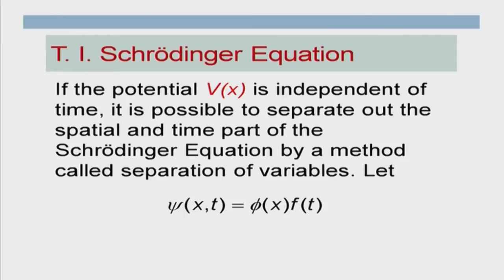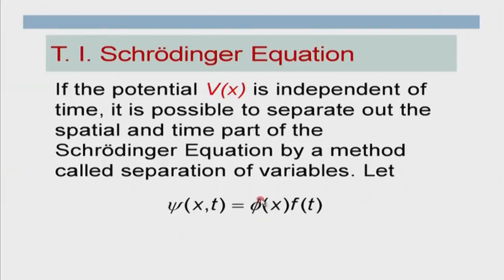We assume that psi(x,t) can be written as a product of two functions: phi(x), which is purely a function of position and contains no time dependence, and f(t), which is purely a function of time with no x dependence. If this product form happens to be a solution, then I will be able to get two different equations — one corresponding to phi and one corresponding to f — and solve them independently.